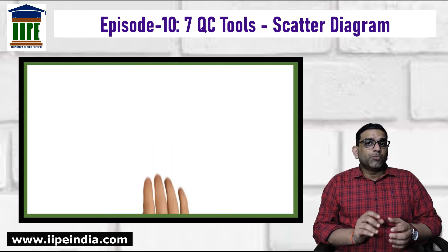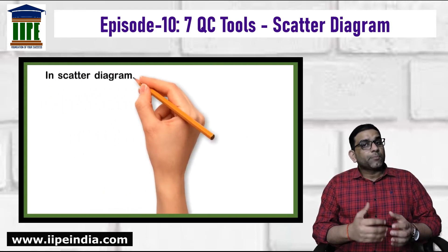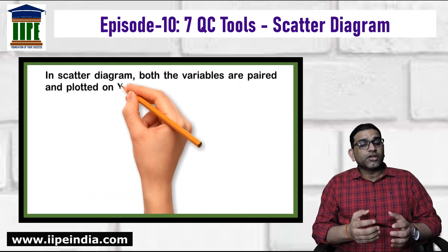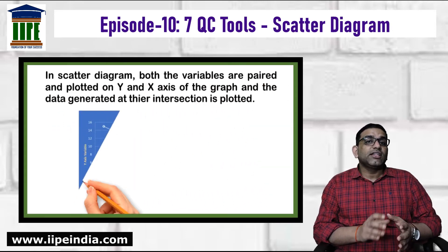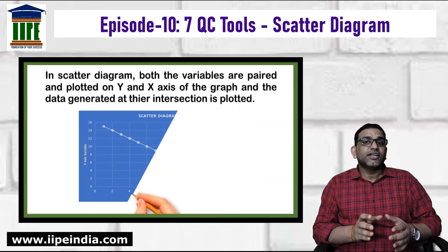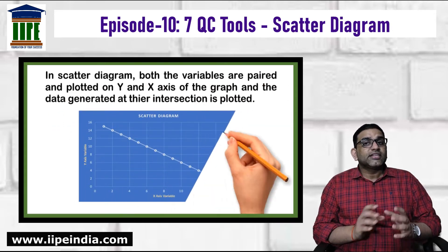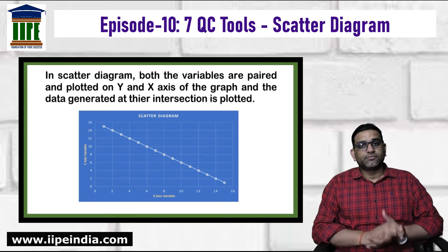In a scatter diagram, both variables are paired and plotted on the Y and X axes of the graph, and the data generated at their intersection is plotted.